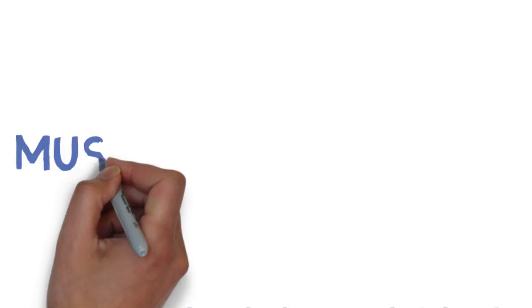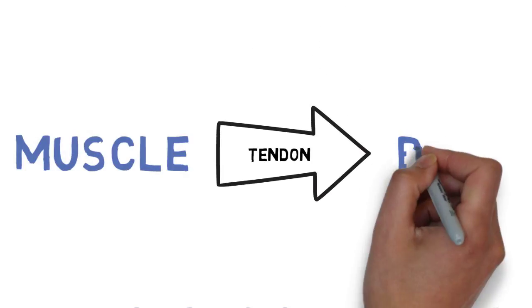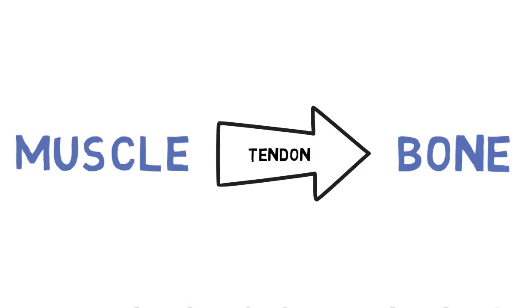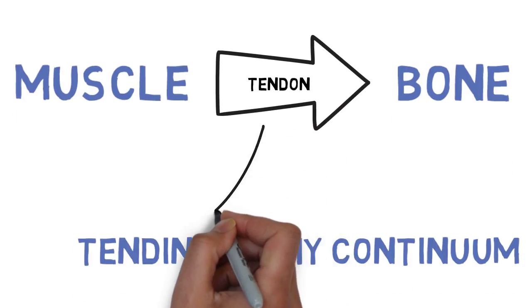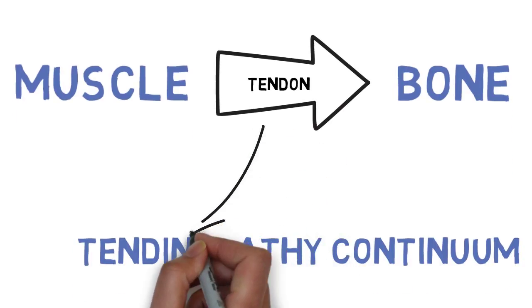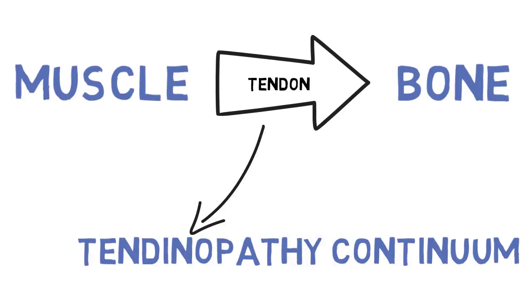Your tendon is the tissue that attaches your muscle to your bone, and it's very, very tough. If you've got a problem with your tendon, it'll often be called a tendonitis or sometimes a tendinosis, but I'm going to call it a tendinopathy because it's a pathology of the tendon.